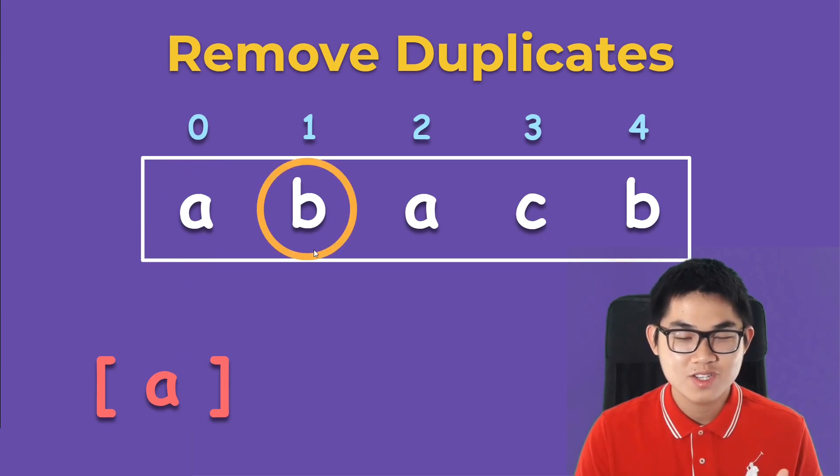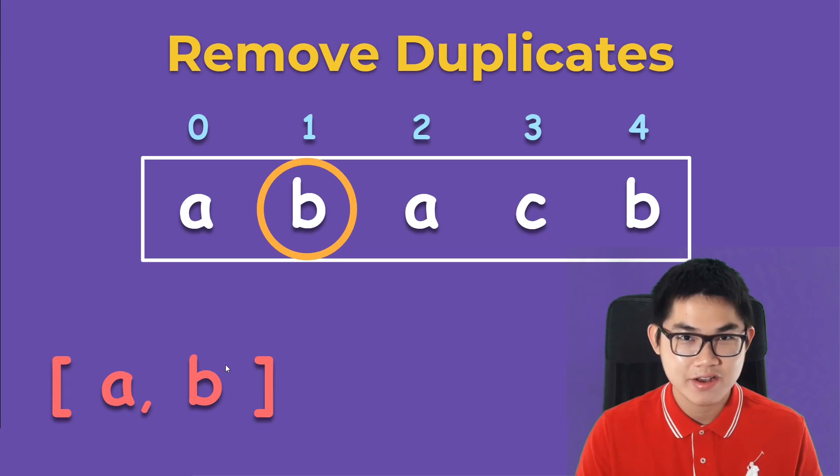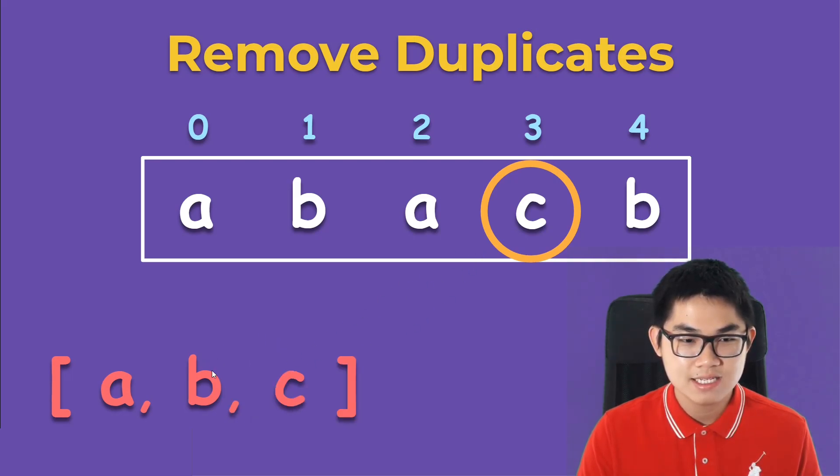And we move on to the next element. Do we have B inside our list? The answer is no, so we add B into the list but at the end. So we add it here. And then we move on to the next element. We see that we have A inside the list already, so we don't add it into the list. We move on to the next one. We don't have C inside the list, so we add it to the end of the list like this.